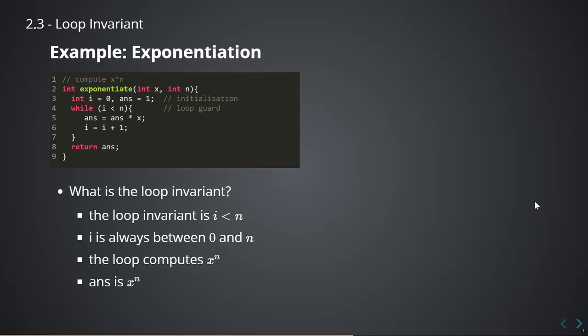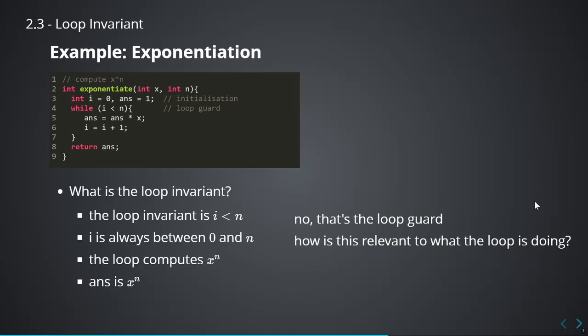The first one: the loop invariant is i less than n. No, that's not the loop invariant — that's the loop guard. Second one: i is always between 0 and n. Sure, but how is that relevant to what the loop is doing? i is between 0 and n, but that doesn't tell me anything. Third: the loop computes x to the n. Alright, that's what the loop does. But as I said before, this is not a loop invariant. And finally: ans is x to the n. Well, that's getting close — that is kind of telling me what the loop is trying to do, what is the purpose of the loop. But that is still not the loop invariant.